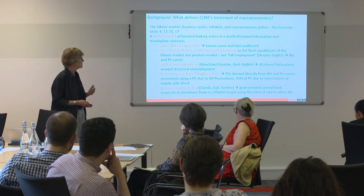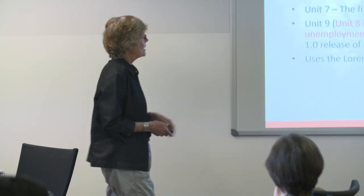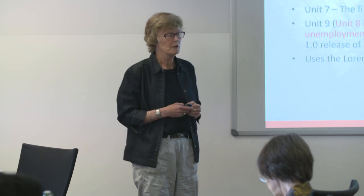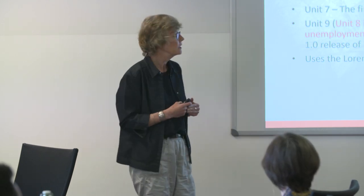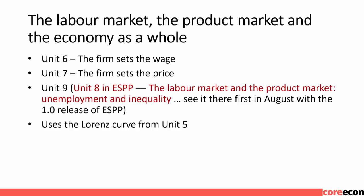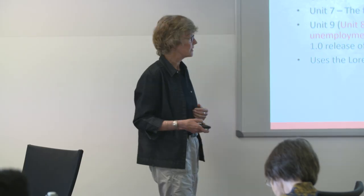What I really want to focus on today is much narrower. I want to pull together what's in unit 6 — the firm sets the wage — and what's in unit 7 — the firm sets the price — into what is now unit 8 in ESPP, which is now called 'the labor market and the product market: unemployment and inequality.' It used to just be called the labor market, and I'm going to try to convince you that having a new title giving equal weight to the labor market and the product market actually helps you understand the model better.